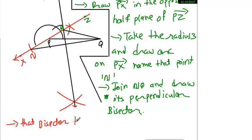That bisector touches PZ at point R. Connect RQ.